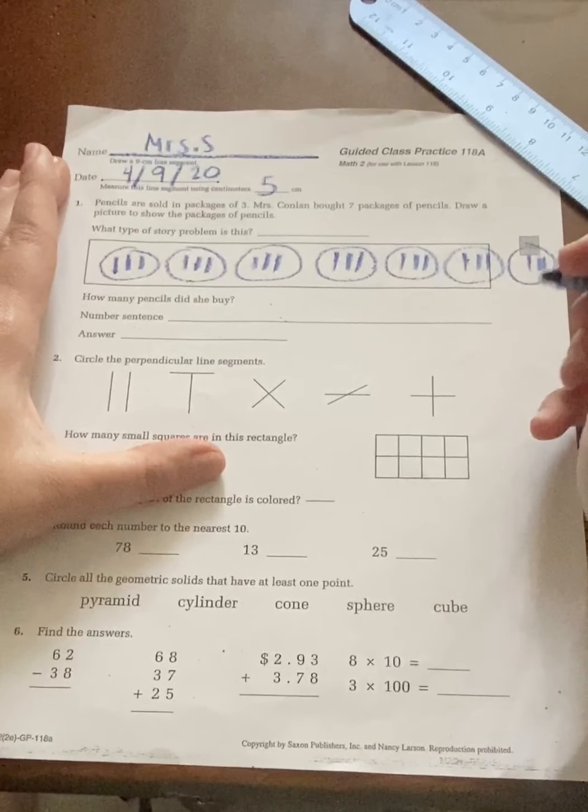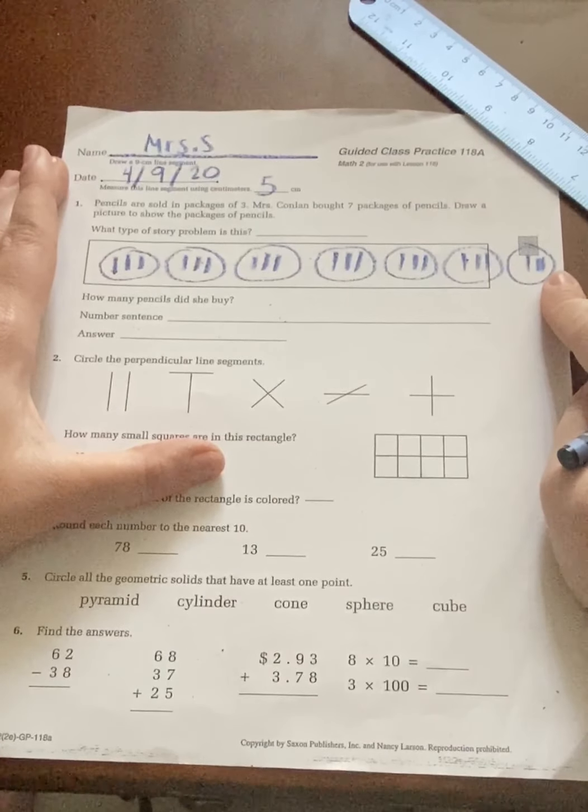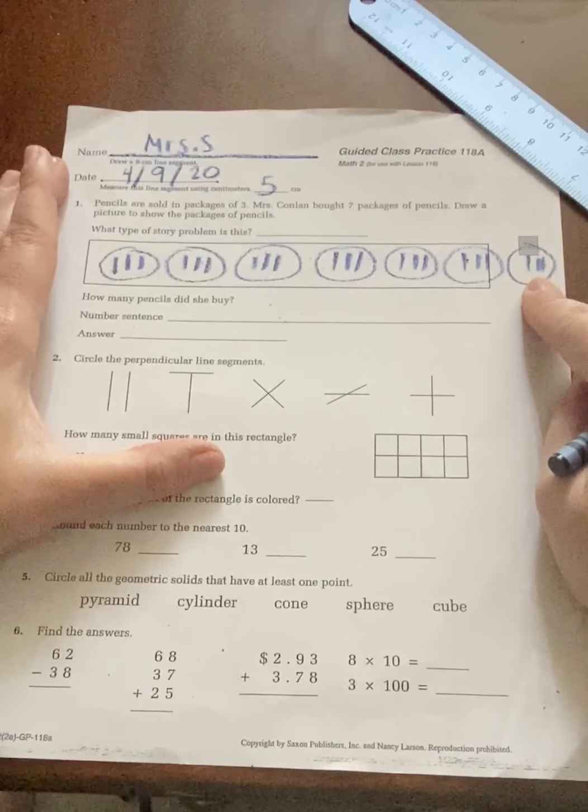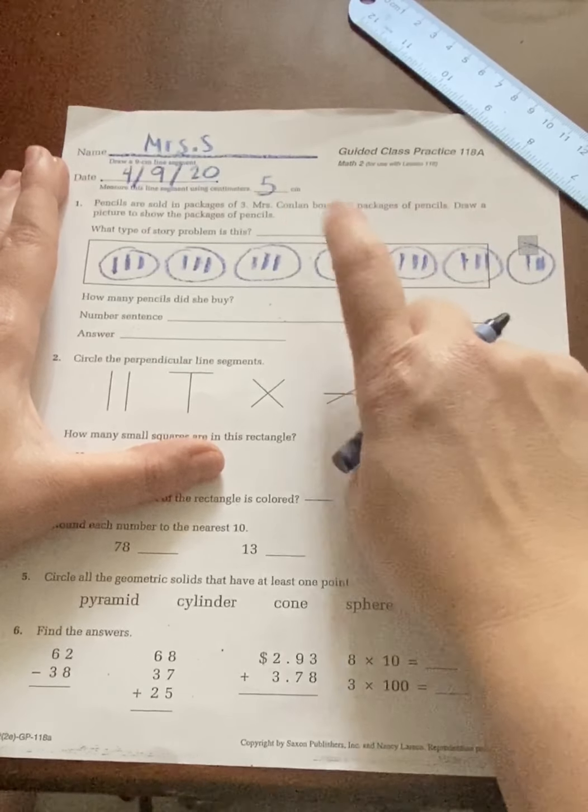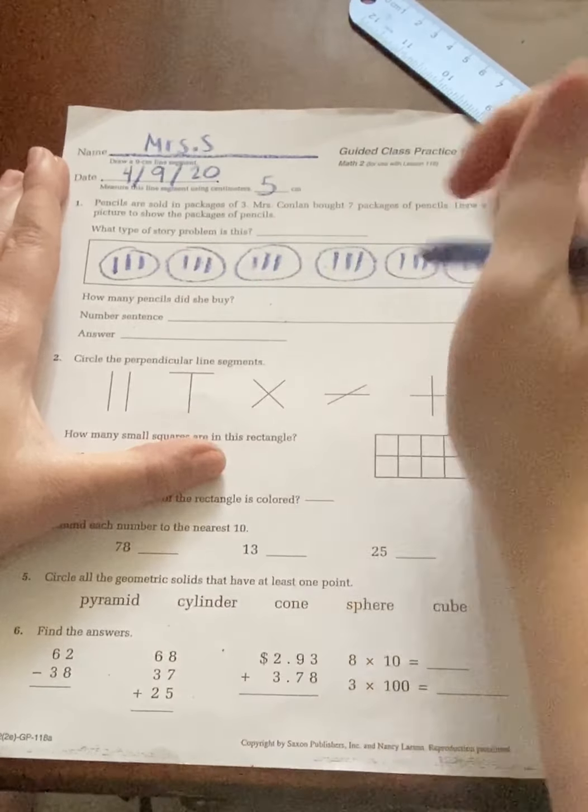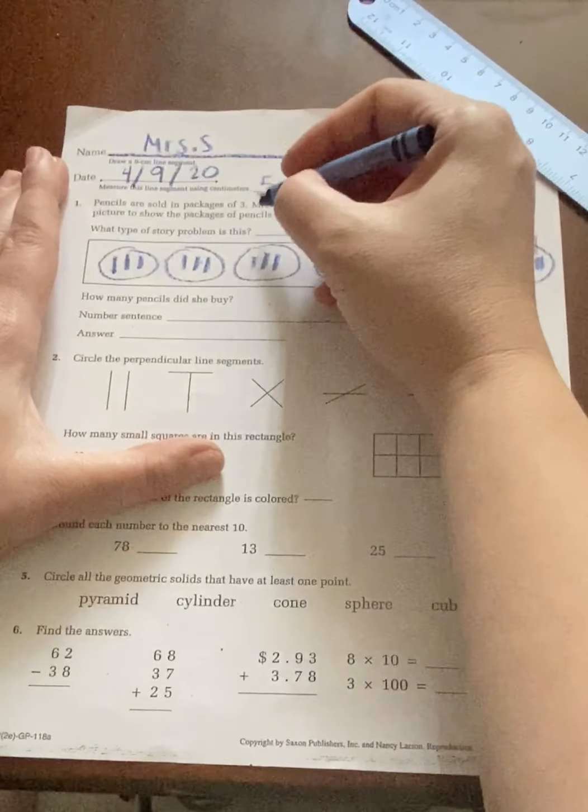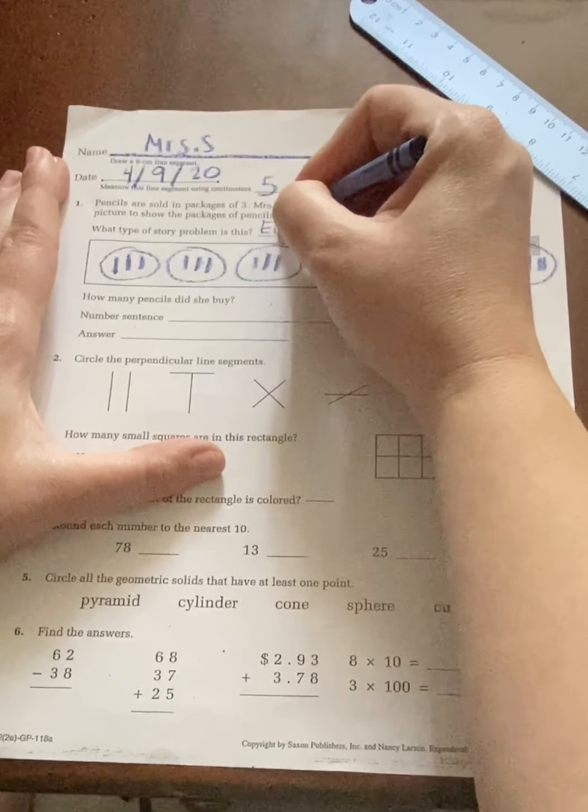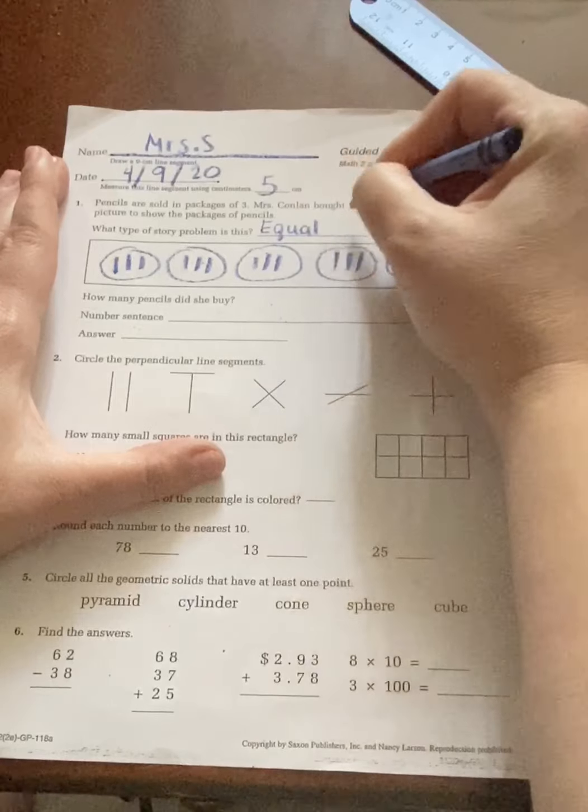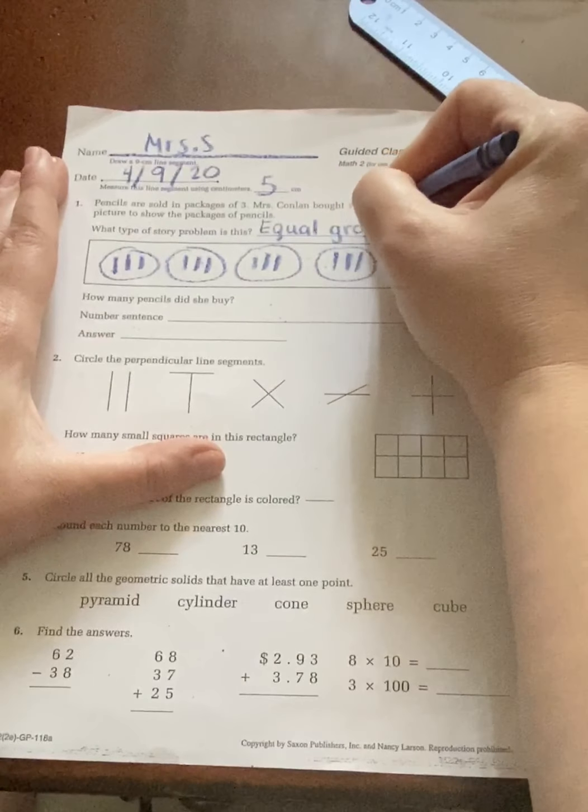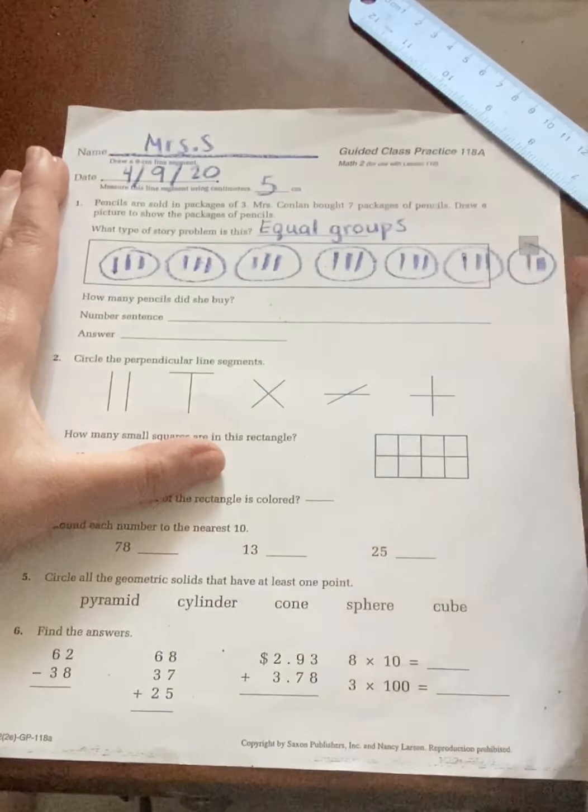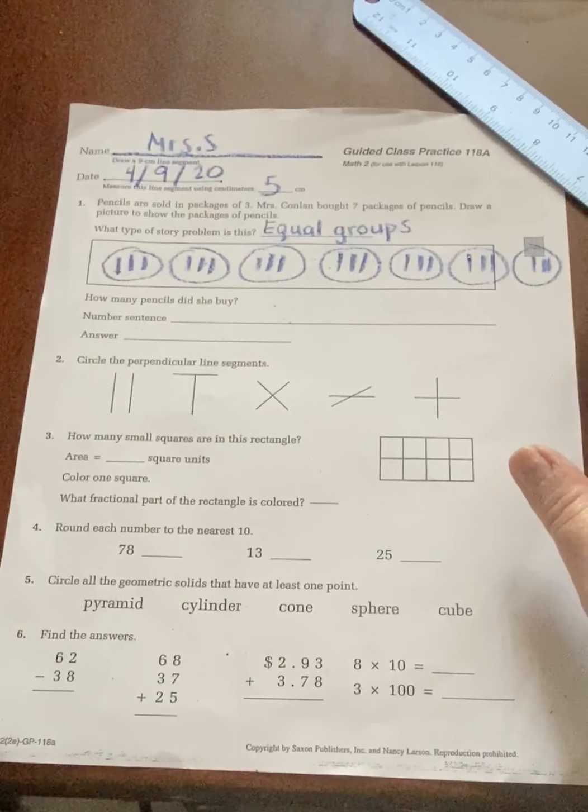Then it says what type of problem is this? So what are we putting these in? Groups, right? And does each group have the same amount? Yes. So the type of story problem this is called is equal groups, better known as multiplication.